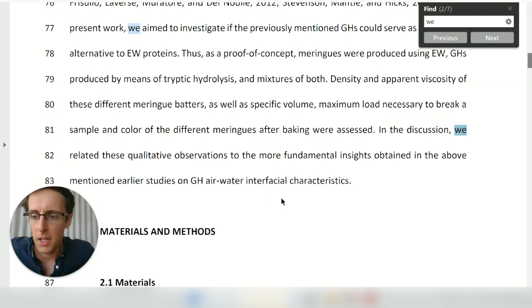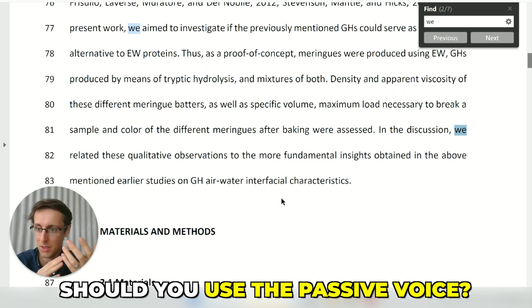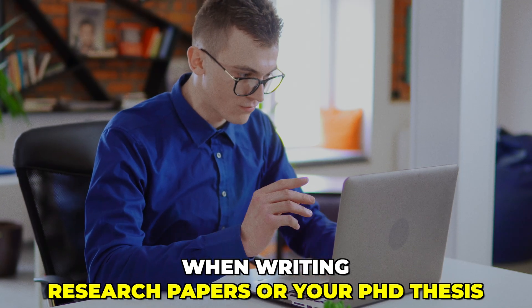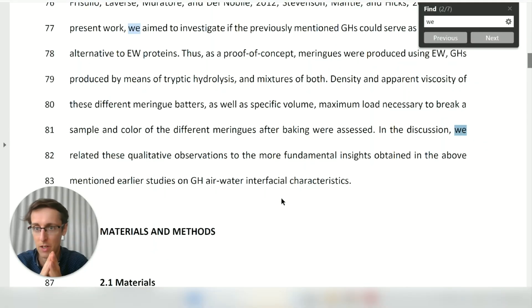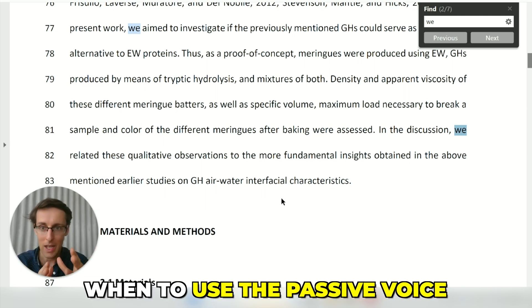Recently I've noticed that there is a little bit of confusion whether you should use we or shouldn't use we, should you use the active voice or should you use the passive voice when writing research papers or your PhD thesis. So I wanted to clarify that, so you know when to use we and when not to use we or I in case you did the study yourself, and when to use active voice and when to use the passive voice.